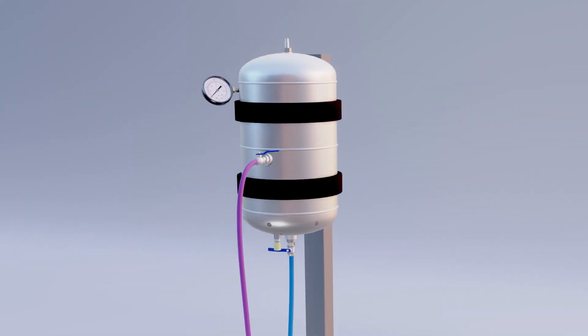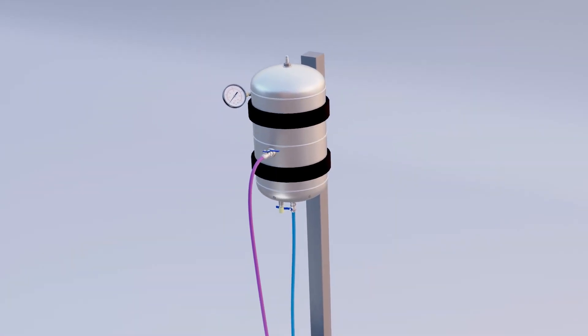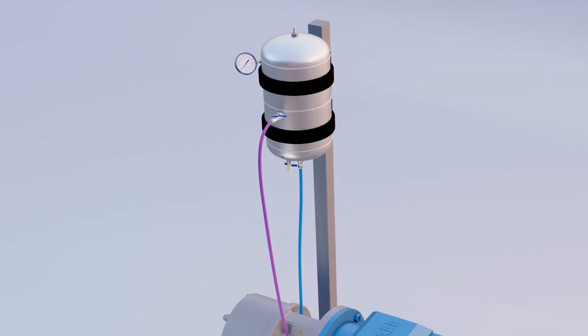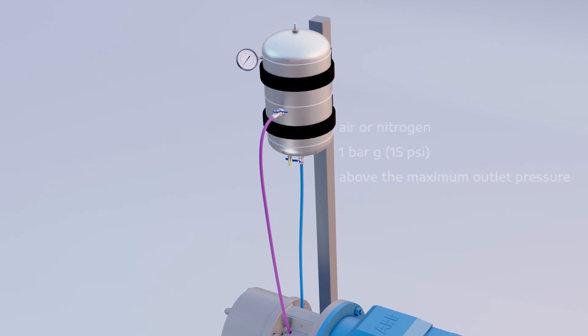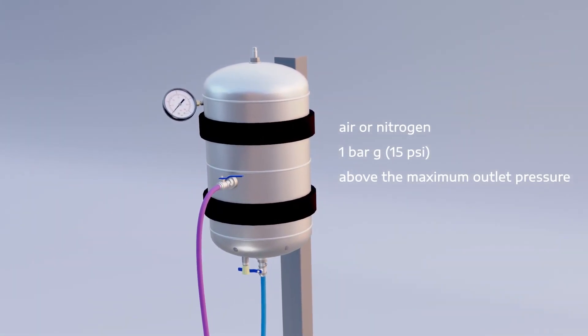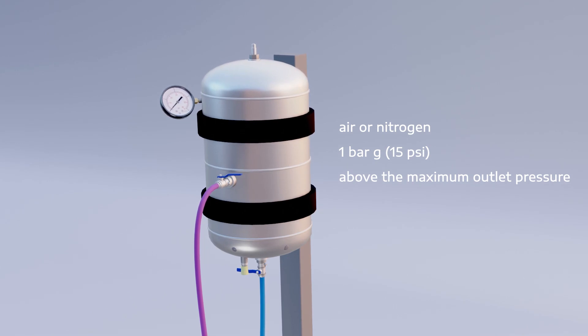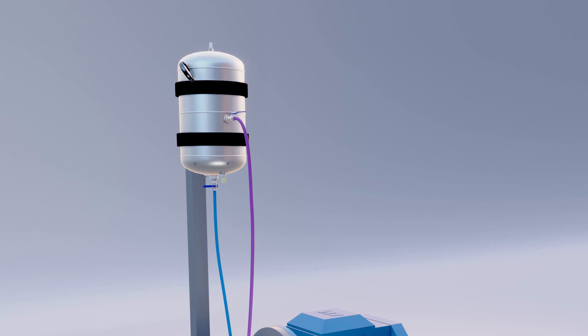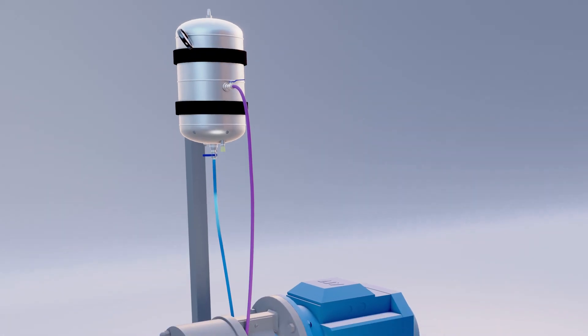The sealant fluid is recirculated from a chamber mounted above the mixer. The chamber is pressurized with air or nitrogen to one bar, 15 psi above the maximum mixer outlet pressure. Sealant fluid flows down to the seal where it cools and lubricates the seal faces.